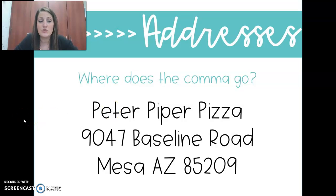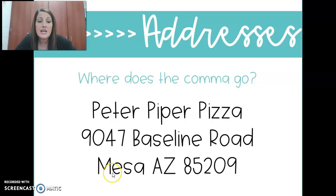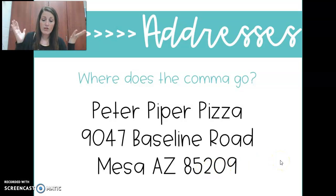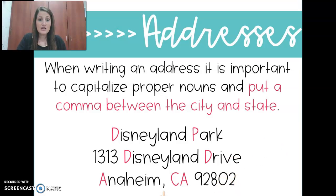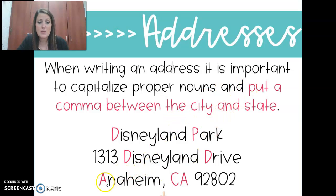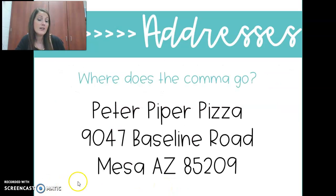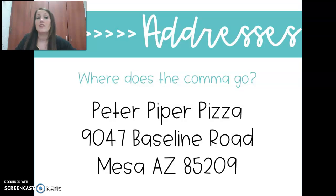Where does the comma go in this one? If we're sending it to Peter Piper Pizza, the address number on the building is 9047 Baseline Road. The city is Mesa, the state is Arizona, and the zip code is 85209. Where does the comma go? It shows us right here in the picture with a little arrow. Put a comma between the city and state — you're separating the city and the state with a comma. So where would it go here? Right there between Mesa and Arizona: M-E-S-A, comma, A-Z.